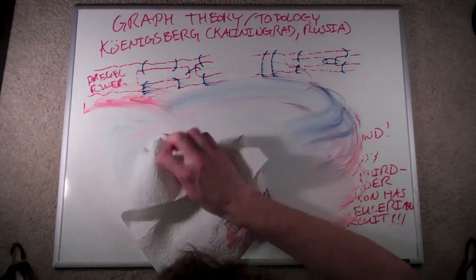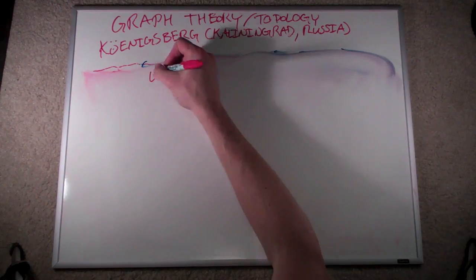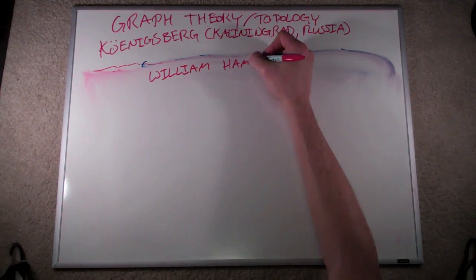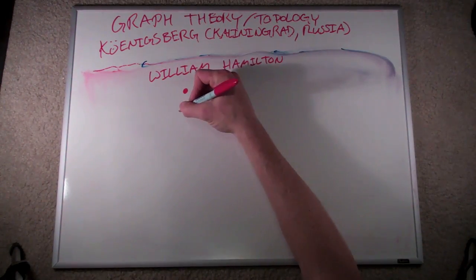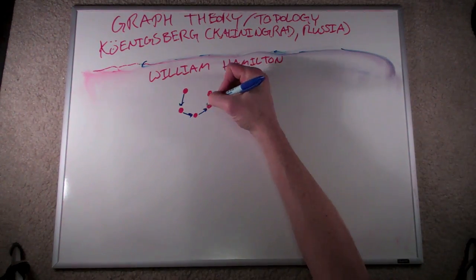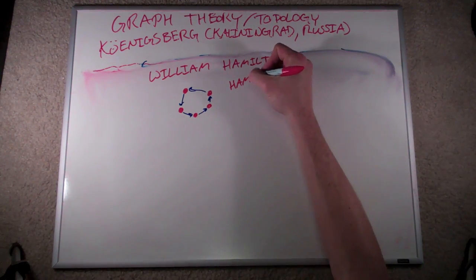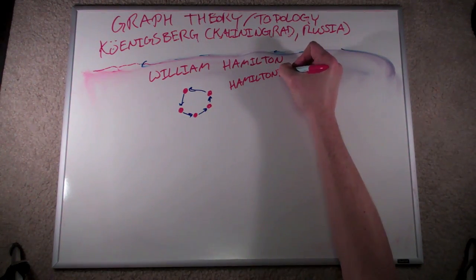Want another application for this kind of math? All right, let's fast forward about 100 years. We'll talk about an Irish mathematician by the name of William Hamilton. Hamilton is also interested in connecting the dots, but in a different way. He's more concerned about the dots than he is the line segments that go between them. Specifically, he wants to visit each dot only once.